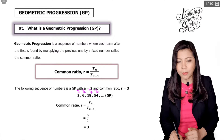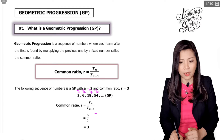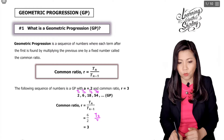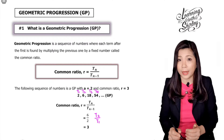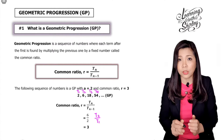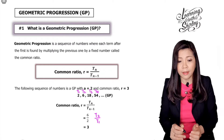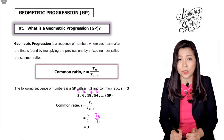We use t2 over t1 because the numbers are smallest, so t2 over t1 is 6 divided by 2, which gives us 3. So for this sequence, a — the first term — is equal to 2, and r — the common ratio — is equal to 3.